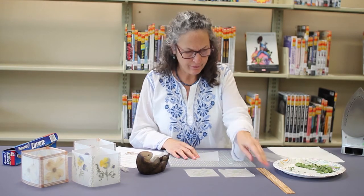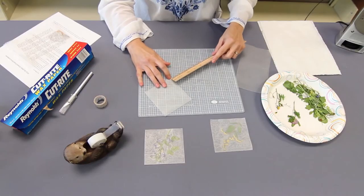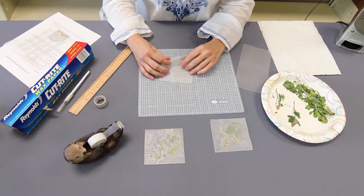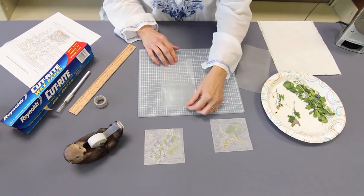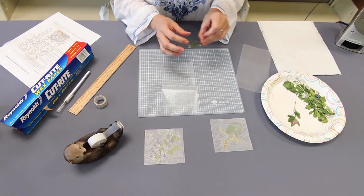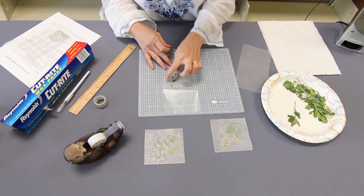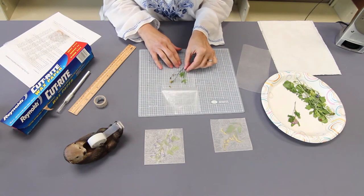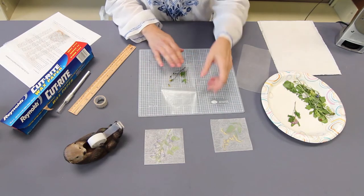I'm going to fold it in half. I like to use the ruler to make sure I get a nice crease. Open the wax paper up. Put your dried flowers to the center and not near the edges because your washi tape will be on the edges. So try to center it as much as you can.